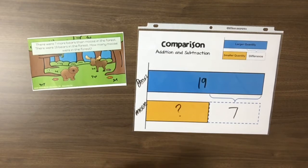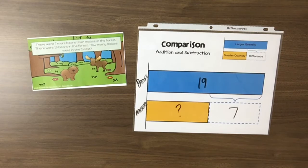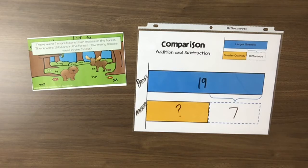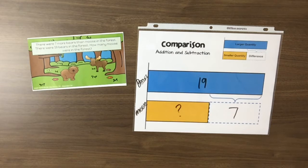To help overcome this misconception, students should be encouraged to use strip diagrams to represent quantities and the relationships among quantities in a word problem. Students can also be encouraged to use physical manipulatives to model problems. Additionally, the use of SOLVE will support students in understanding how to analyze and solve word problems rather than solely relying on keywords. Throughout the rest of this video, these strategies will be modeled when representing and solving comparison problems.